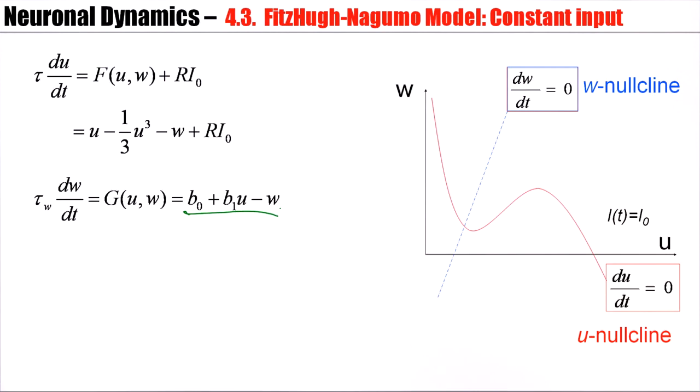And this value has been calculated for the case that the current is zero. So, the u-nullcline for i equals zero, we have w equal u minus one-third u-cubed. Set this equation to zero and you have it.